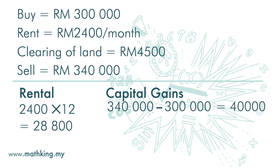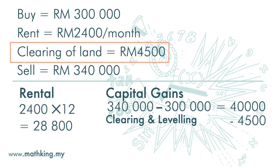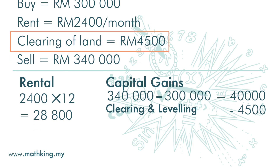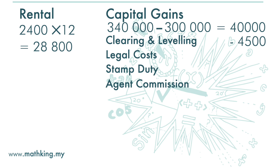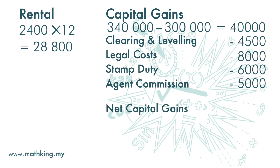To find the net capital gains, we need to include additional costs. The clearing and leveling cost of RM4,500 is considered a cost for improvement of the land. There are also legal costs of RM8,000, stamp duty of RM6,000, and agent commission of RM5,000. So the net gain from capital is RM16,500.